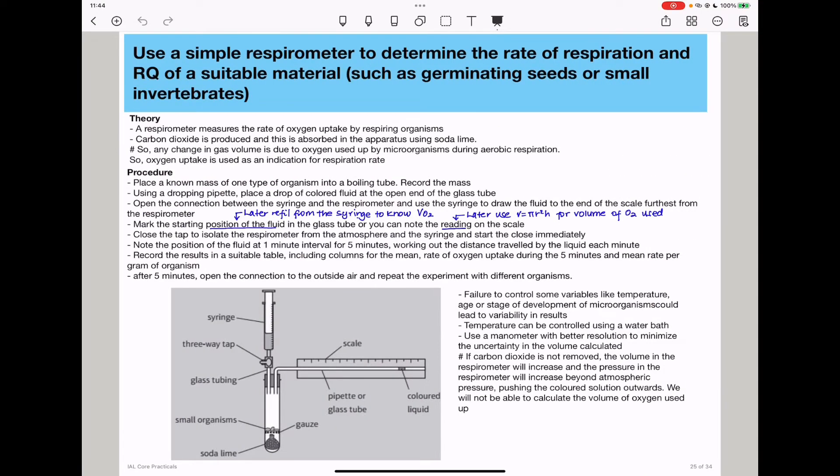So here the theory is, a respirometer is used to measure the rate of oxygen uptake by respiring organisms. Of course, because during respiration, oxygen is taken up and CO2 is produced, so the produced CO2 is going to be absorbed by the soda lime.